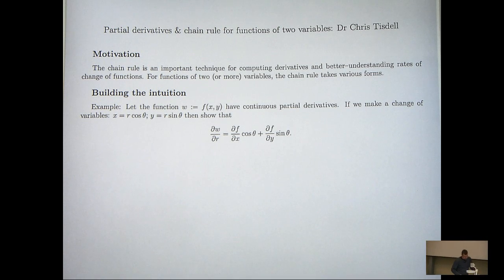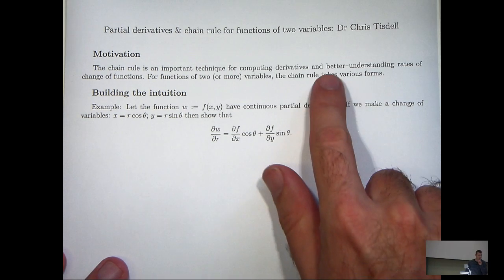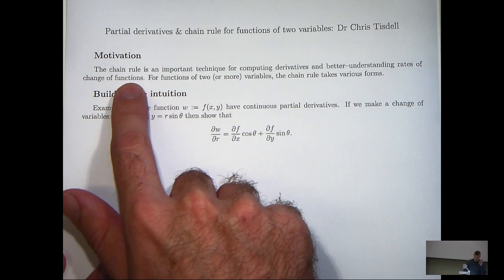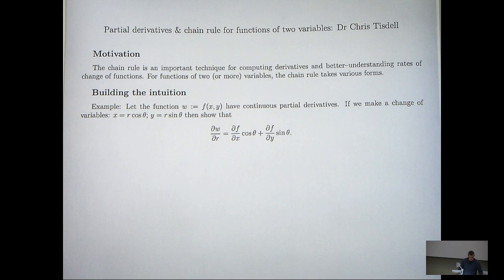At school you would have seen the chain rule for functions of one variable. The chain rule is an important technique for computing derivatives, and if we can compute derivatives then we can form a better understanding of the rates of change of functions. For functions of two or more variables, the chain rule gets a lot more complicated, a lot more profound, and there are many different forms of the chain rule. So it's a big step from the chain rule you saw at school to the chain rule for partial derivatives and functions of two or more variables.